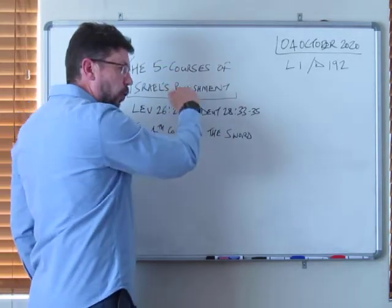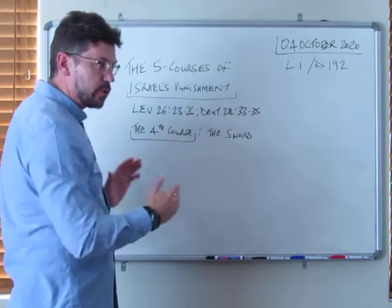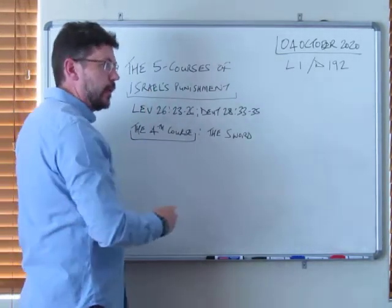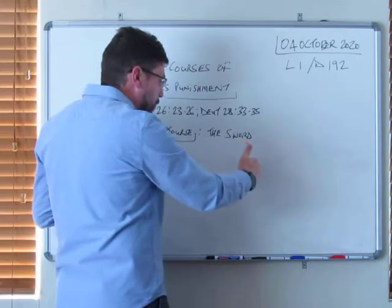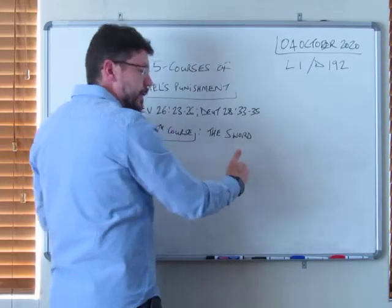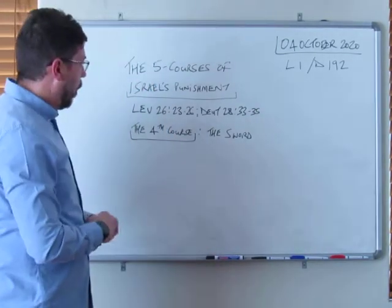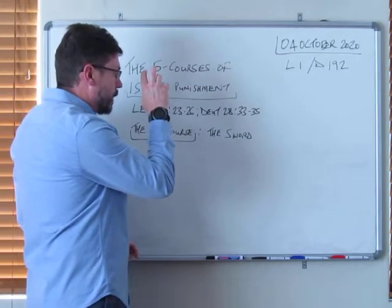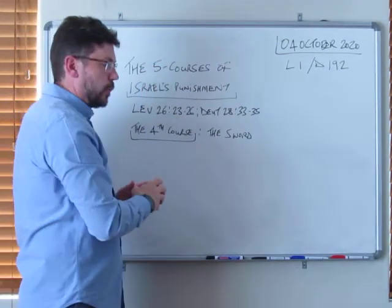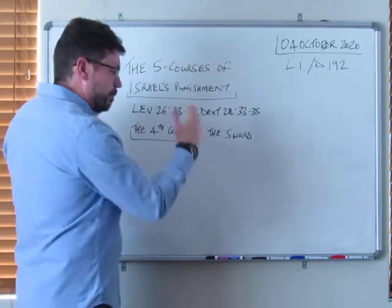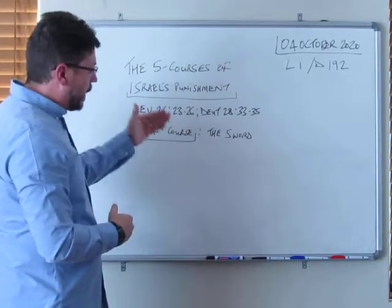And He says, if you continue to walk contrary to Me, then I will walk contrary to you. And I will bring seven times more punishment upon you. We looked at the second one, it was seven times more punishment. The third one, it was seven times more plagues. And now with the fourth one, He mentions the third time in this passage of Scripture, seven.